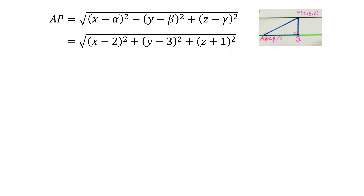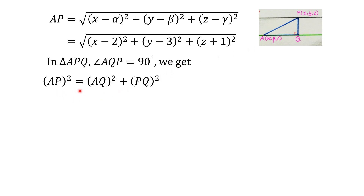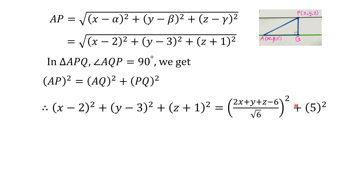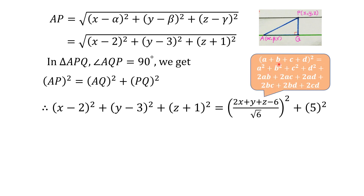Now we have obtained all the distances from triangle APQ. In this triangle, angle AQP is 90 degrees, so by Pythagoras theorem, AP squared equals AQ squared plus PQ squared. Replacing their values gives us the expression. To simplify the squared term with four components, we use the expansion formula: (a plus b plus c plus d) squared equals a squared plus b squared plus c squared plus d squared plus 2ab plus 2ac plus 2ad plus 2bc plus 2bd plus 2cd.